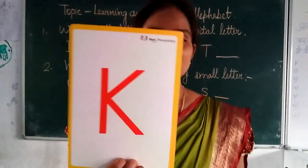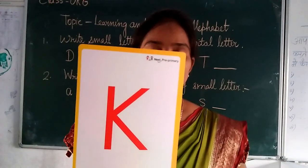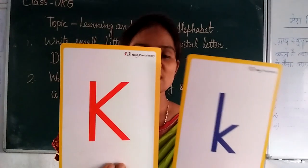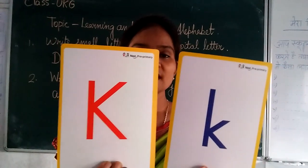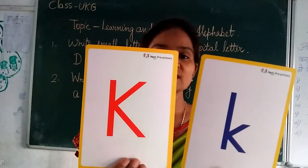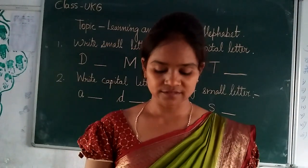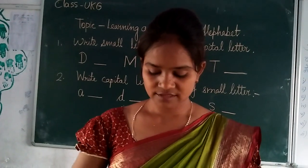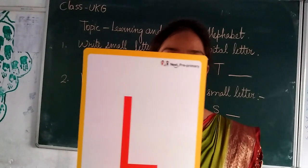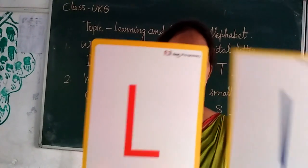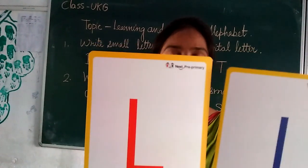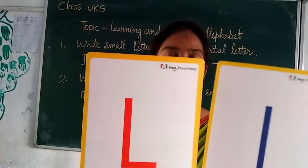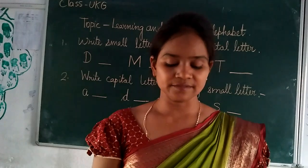Capital K. Small K. K for kite. Capital L. Small L. L for lion.